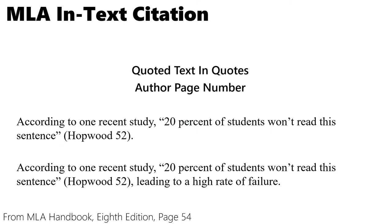Let's look at some different ways to cite quotes. The main pieces of information a reader will need to find the original source are the author of the quote and the page number the quote appears on. We put this information in parentheses. The standard way: start with a little introduction, such as 'According to one recent study,' then the direct quote in quotation marks, followed immediately by the citation in parentheses — author's last name, no comma, then the page number. For example: (Hopwood 52), then a period.